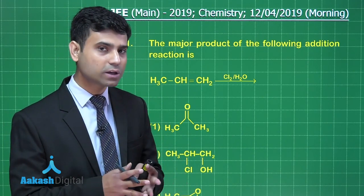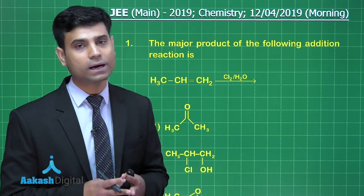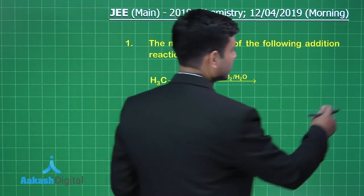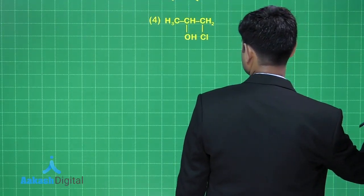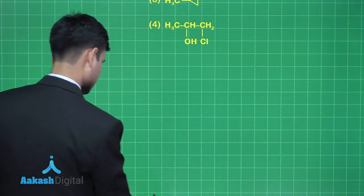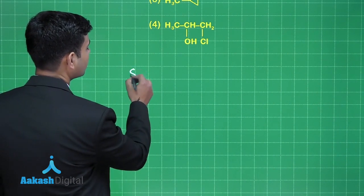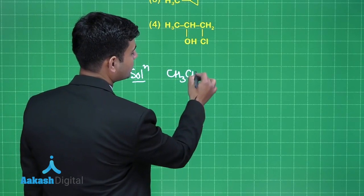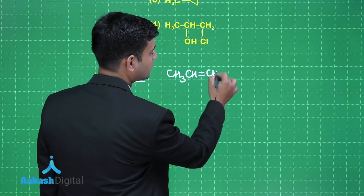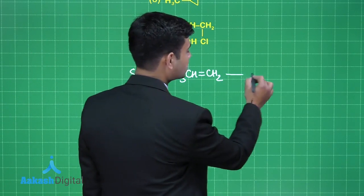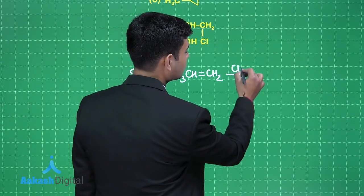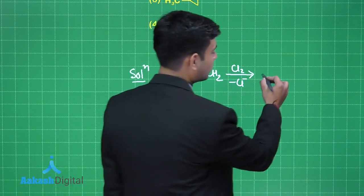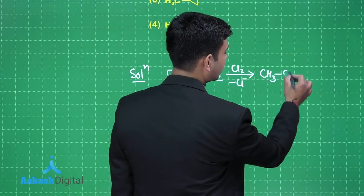Let us write the reaction completely. We have propene, this is CH3-CH=CH2. When it reacts with Cl2, Cl minus will be released and it will give us cyclic chloronium ion.